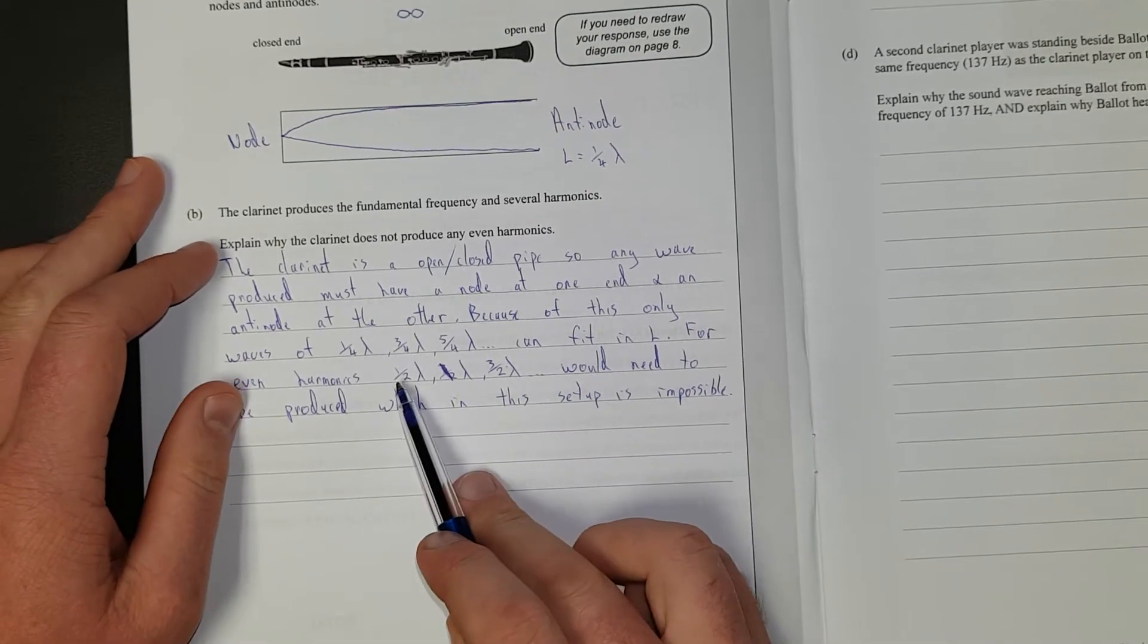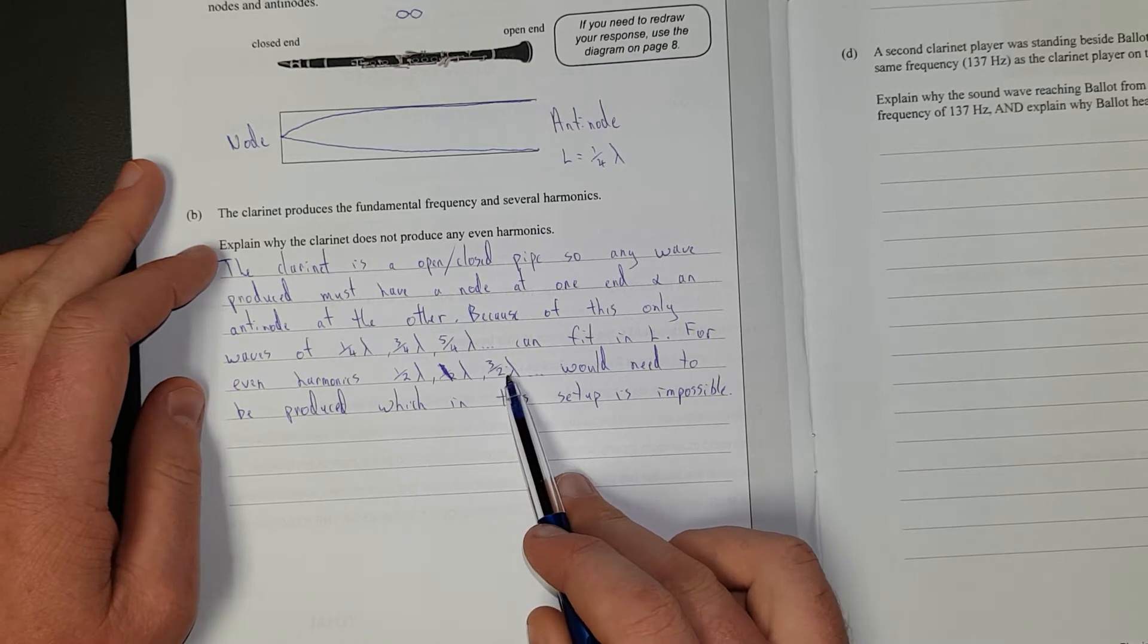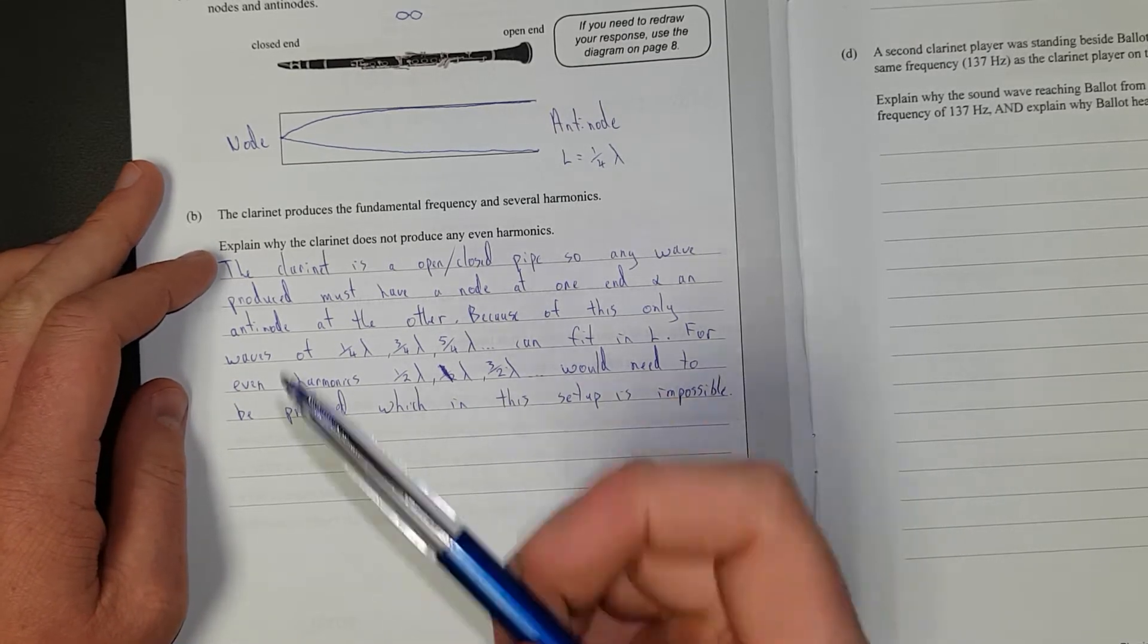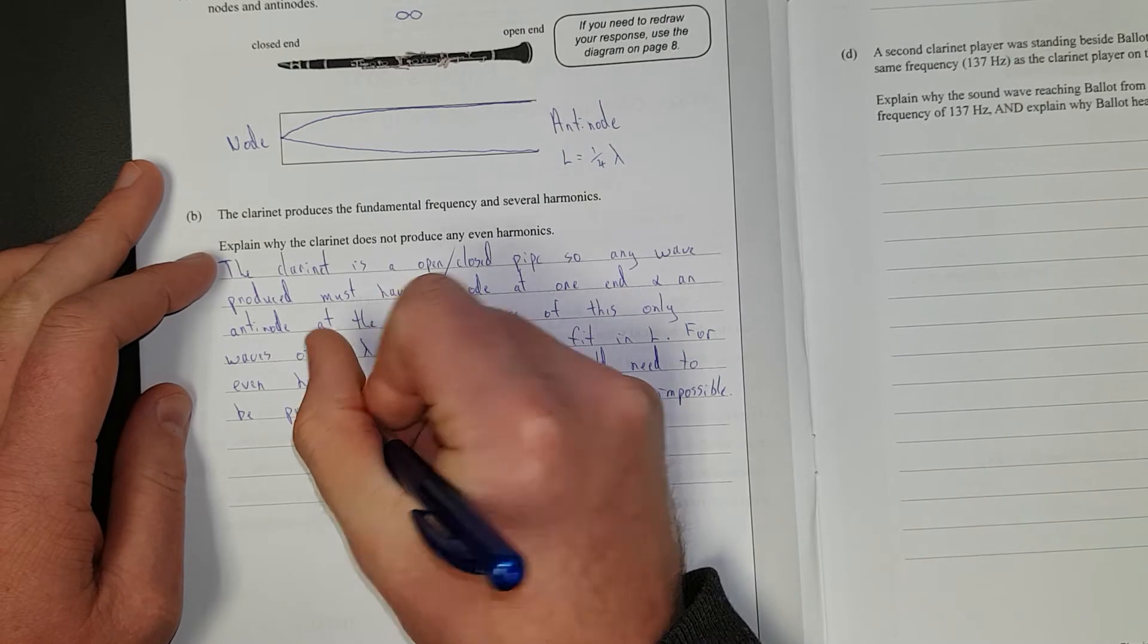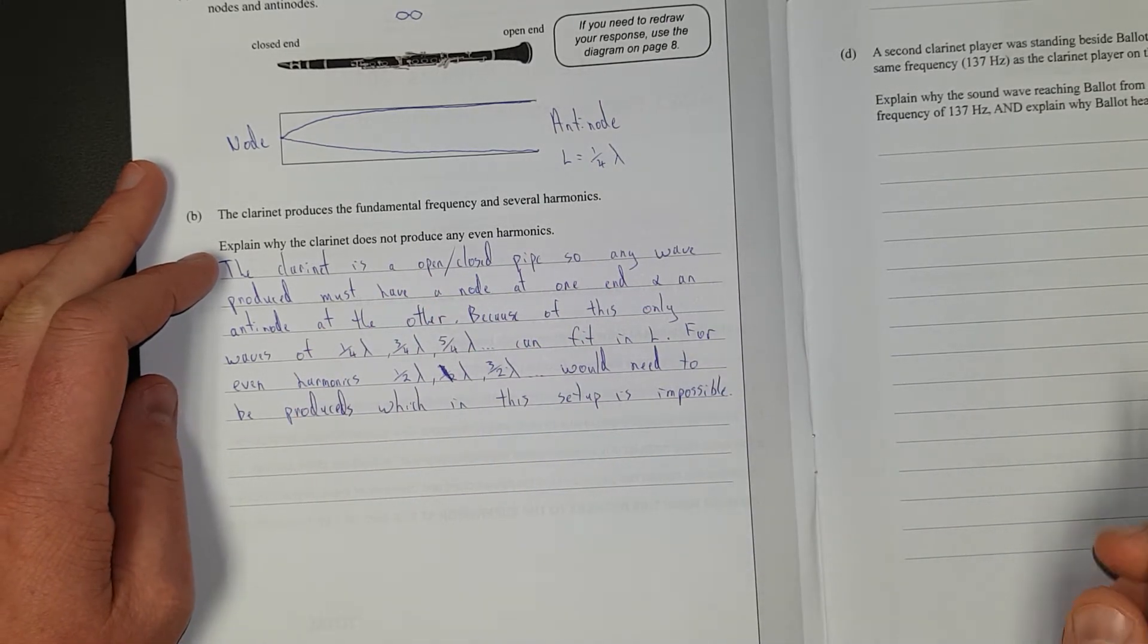For even harmonics, half wavelength, one whole wavelength, or three over two wavelengths would need to be produced, which in this setup is impossible.